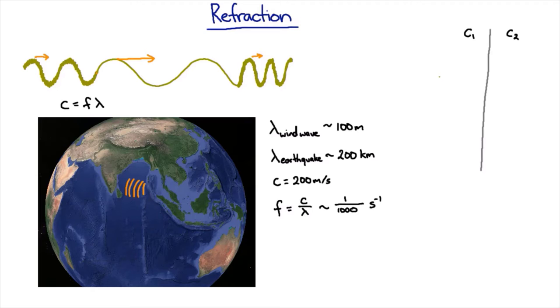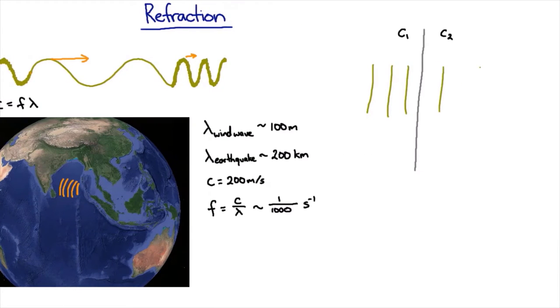If the wave was coming straight on, then if the speed went up, then this wavelength would just go up. And if the speed went down, the wavelength would just go down.